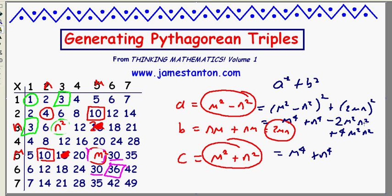Well, this is m to the 4th plus n to the 4th minus 2m squared n squared plus 4m squared n squared, which is plus 2m squared n squared. But actually, that is (m squared plus n squared) squared, which is c squared.